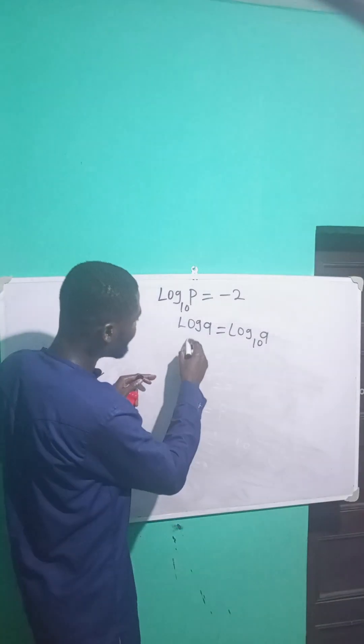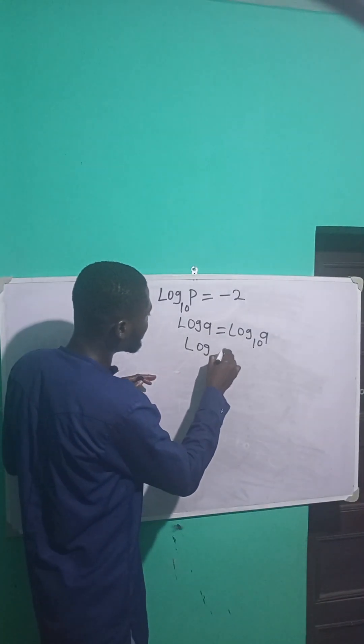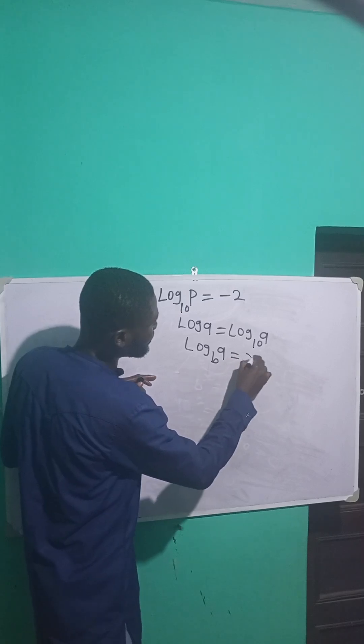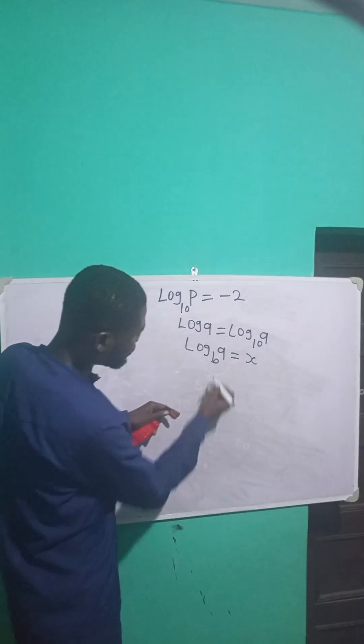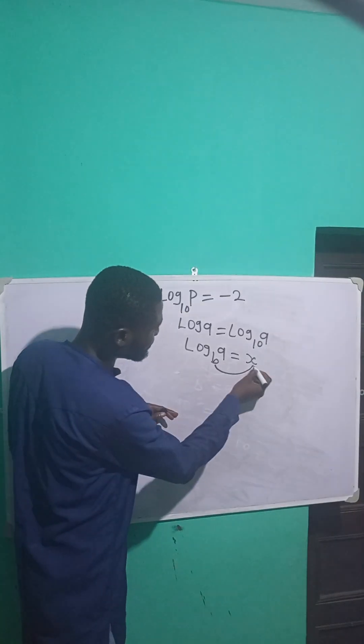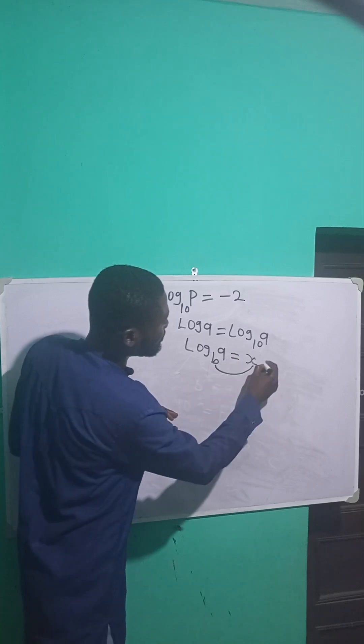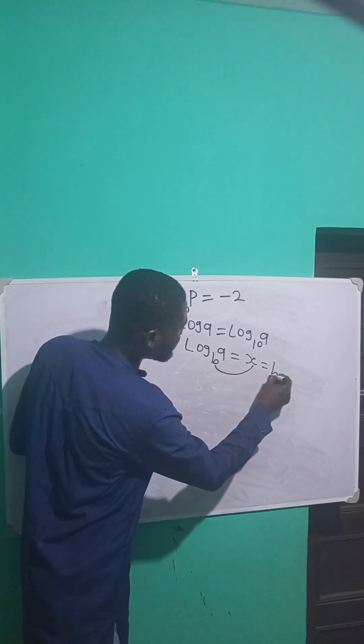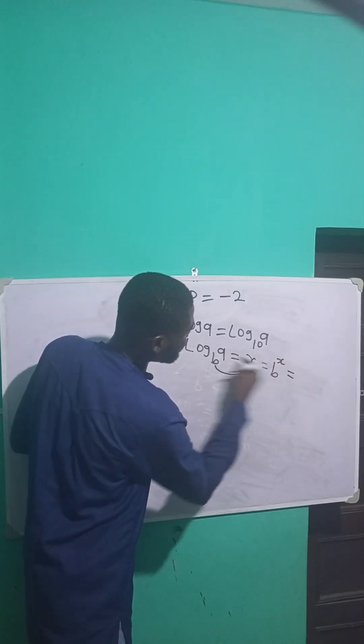Now, again, remember that for every log A to a base of B which is equal to X, what you're going to do is take this base of B and raise it to this power to be equal to A. So it becomes: this B raised to the power X is equal to A.